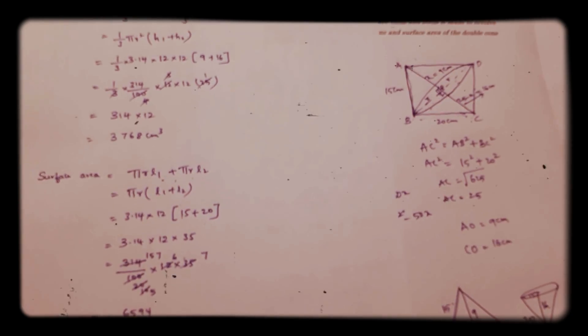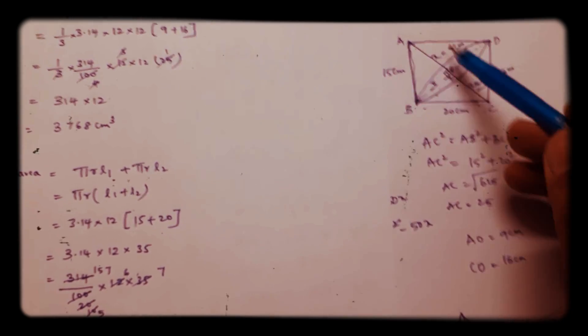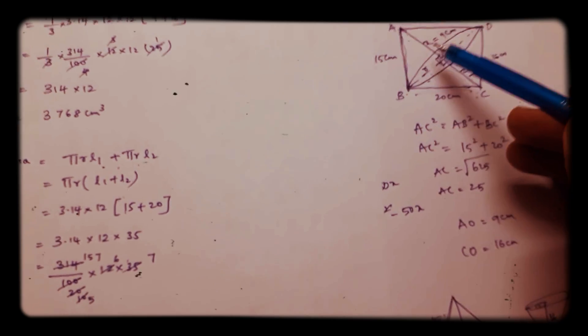In this way we can solve the problem of a double cone. If it is revolved along the hypotenuse we will get a double cone.